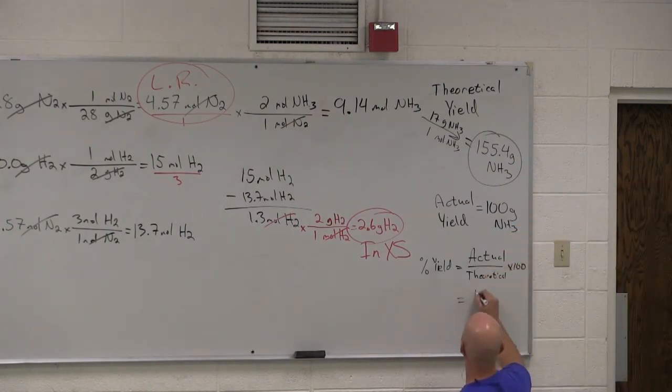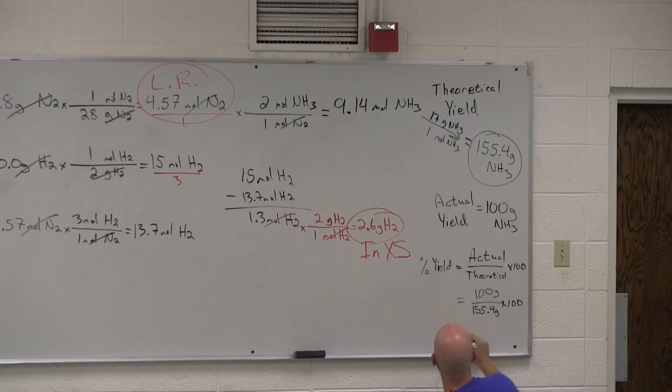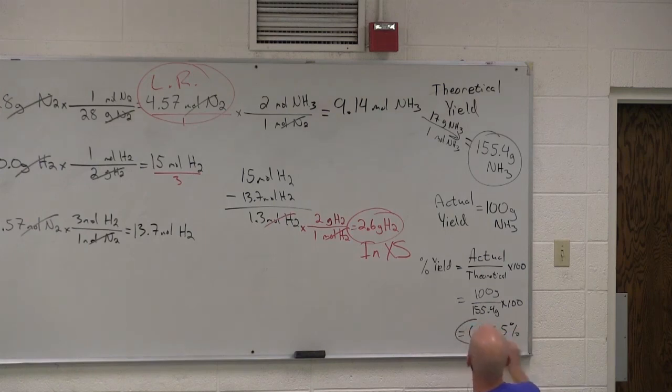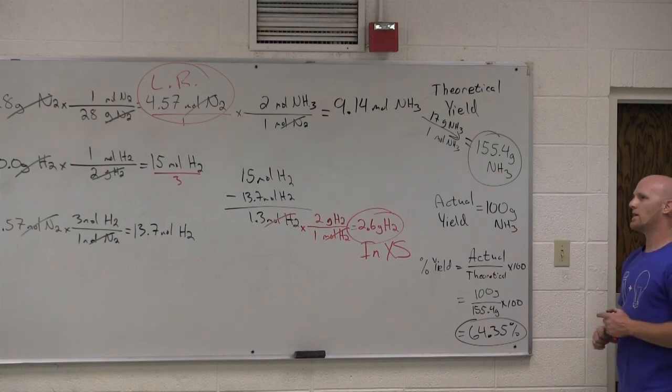So, in this case, it would be 100 grams over 155.4 grams times 100. And what do we get? 64.35%. 64.35% would be our percent yield in that case. Questions?